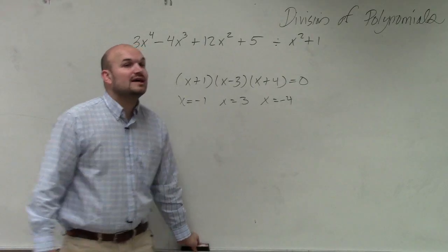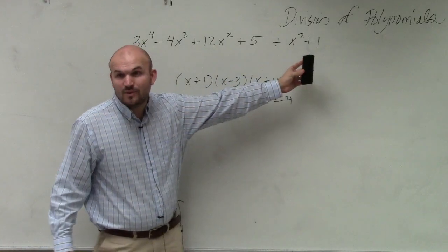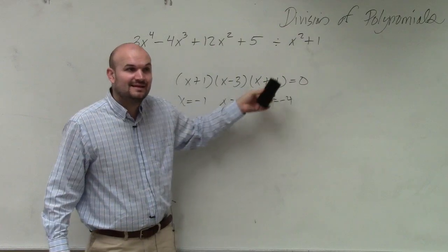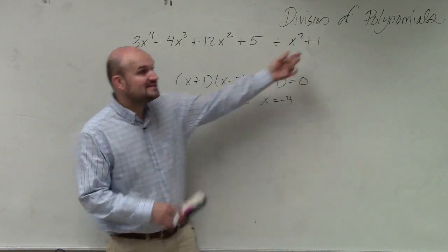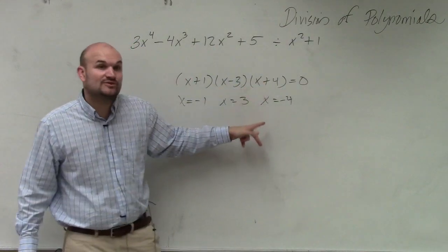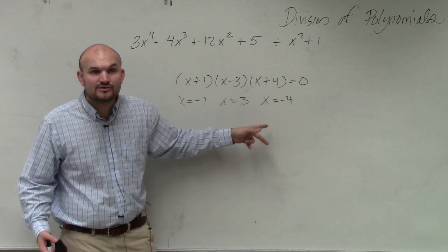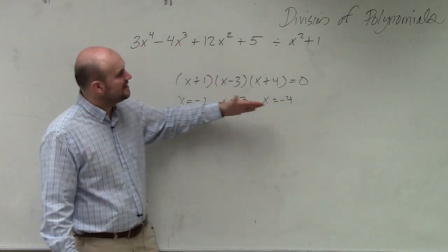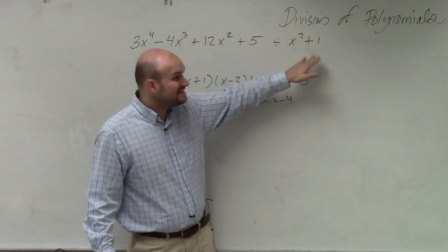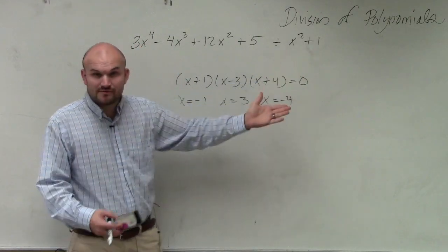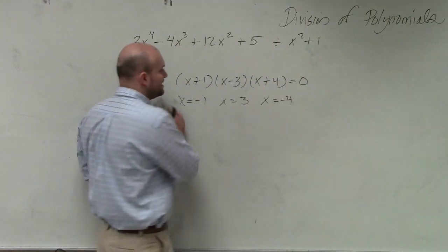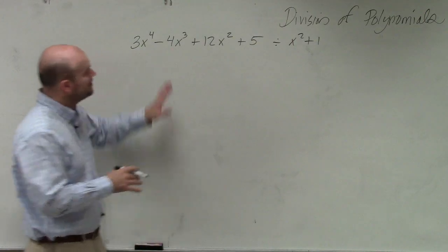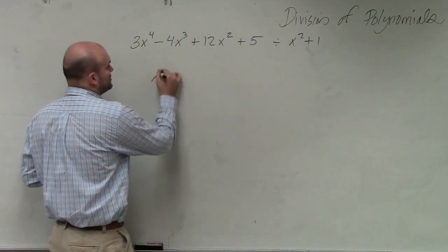So if this is a factor, what can I determine from that? If I know this is a factor, then I can set it equal to 0 to find the zeros. I want you guys to understand that if this is a factor, you can find the zeros from that. But before we get to that, we want to understand: is this first a factor? So we're going to set it up using long division.